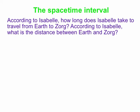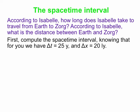Now let's look at things from Isabel's perspective. How long does Isabel take to travel from Earth to Zorg according to Isabel? What's the distance between the two planets according to Isabel? The two events we're talking about are: event one, Isabel passes Earth; event two, Isabel passes Zorg. According to you, between those two events there's a time interval of 25 years, and those two events are separated in space by 20 light years.